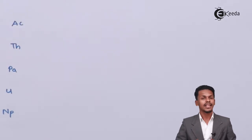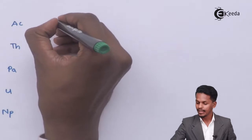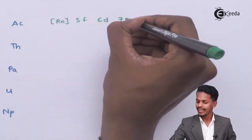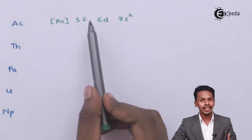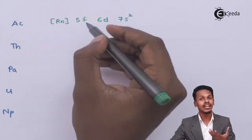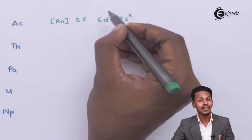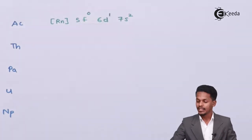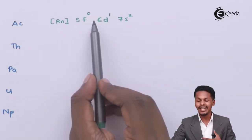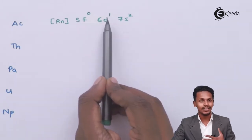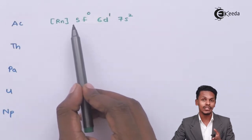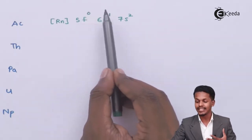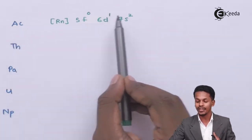For actinium, the electronic configuration is written as [Rn] 5f⁰ 6d¹ 7s². Actinium has 89 electrons, and the extra electron does not get added to the f orbital; instead it goes to the d orbital. The 5f and 6d orbitals have almost the same energy. The f orbital is most stable when it has 0, 7, or 14 electrons, so the electron enters the 6d orbital instead.